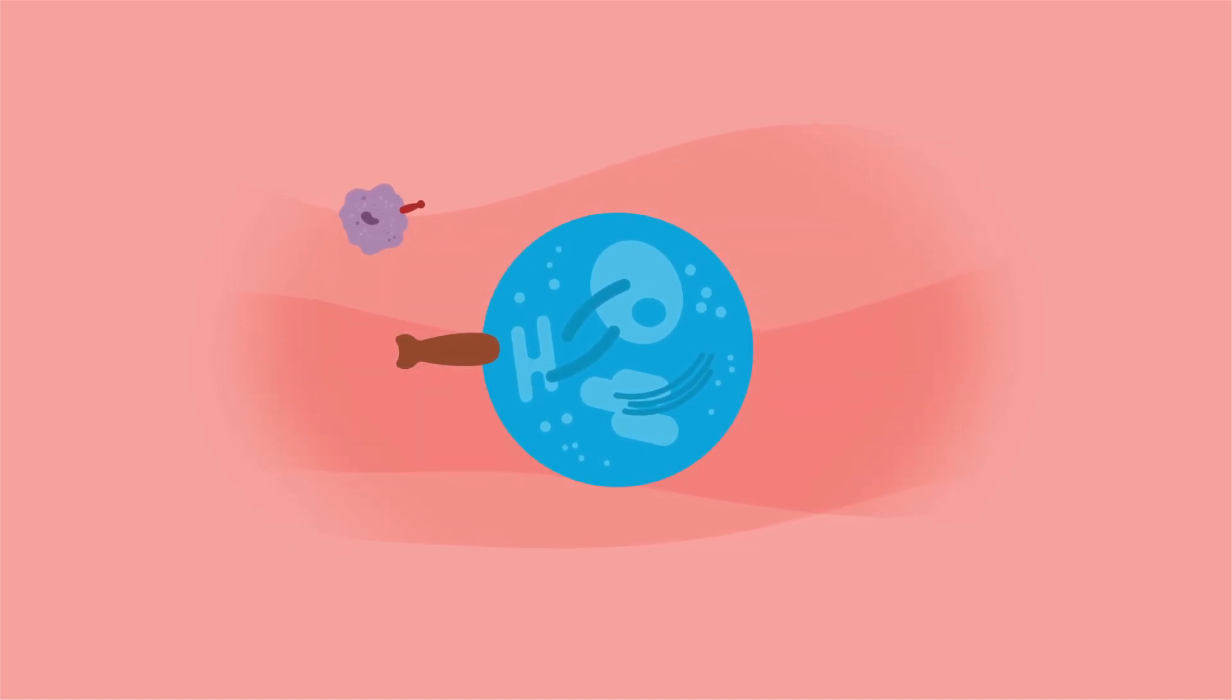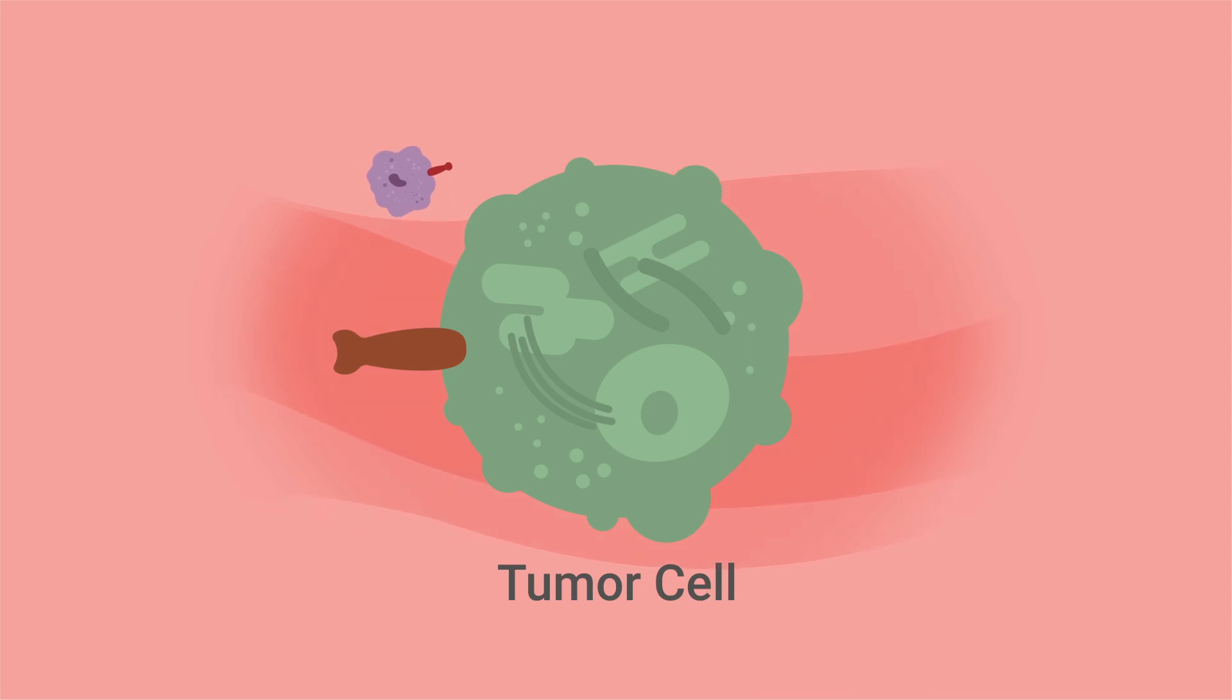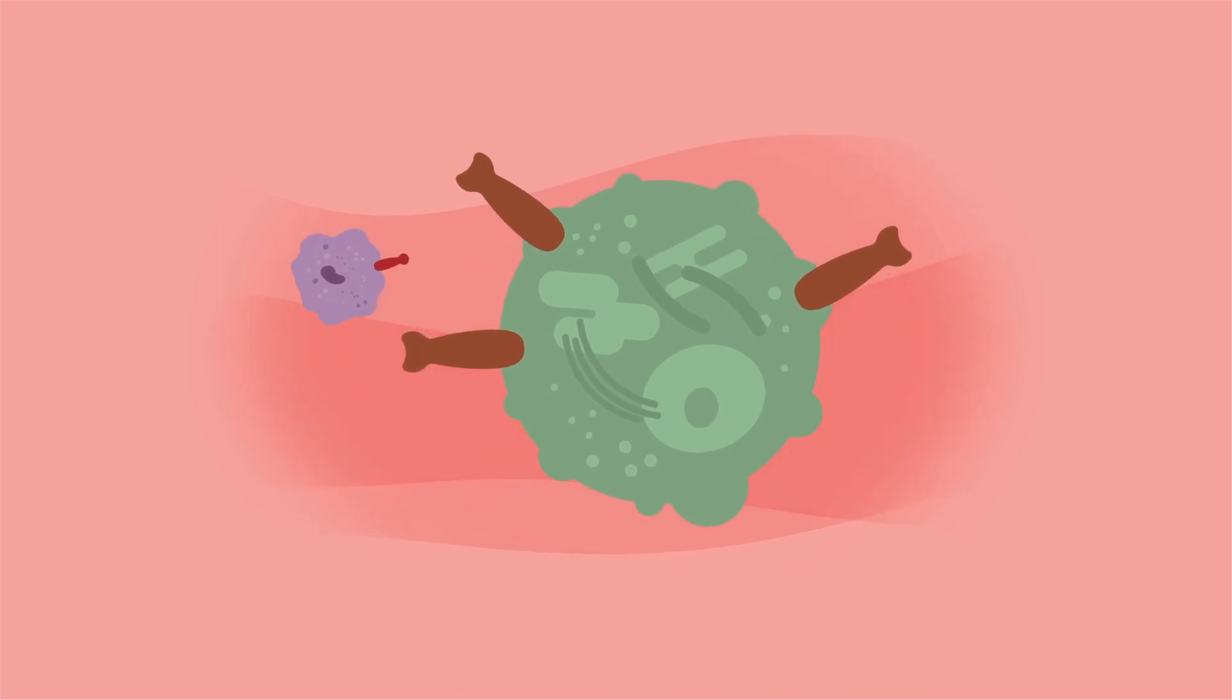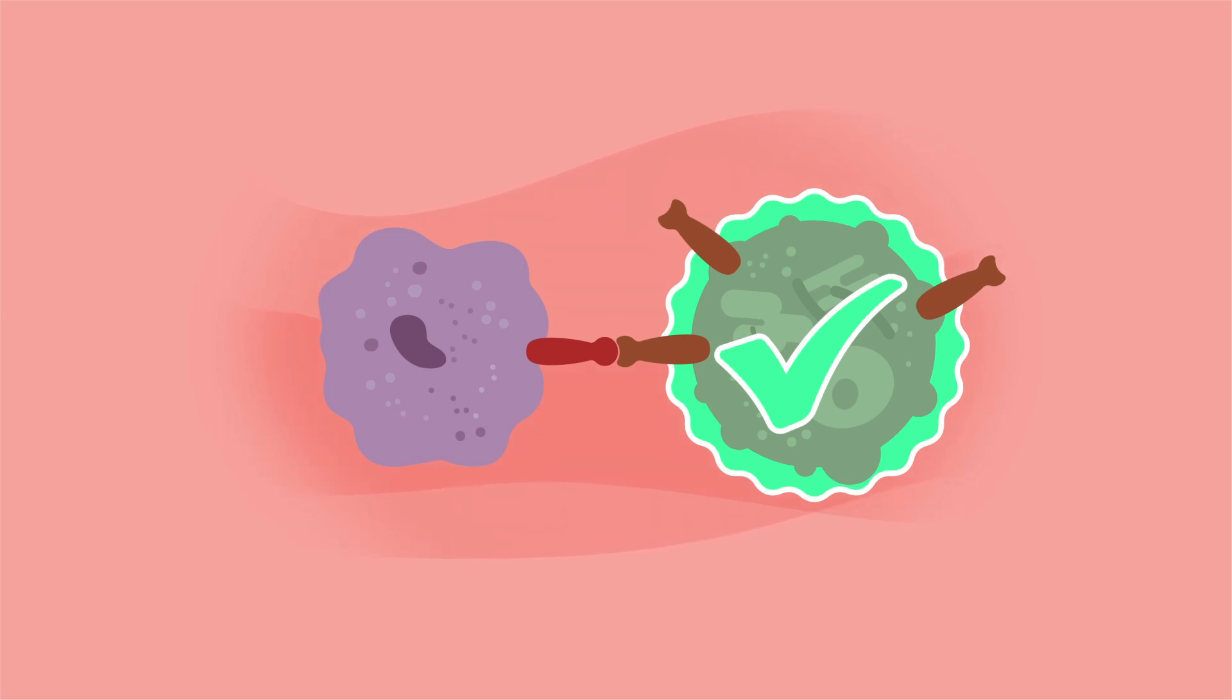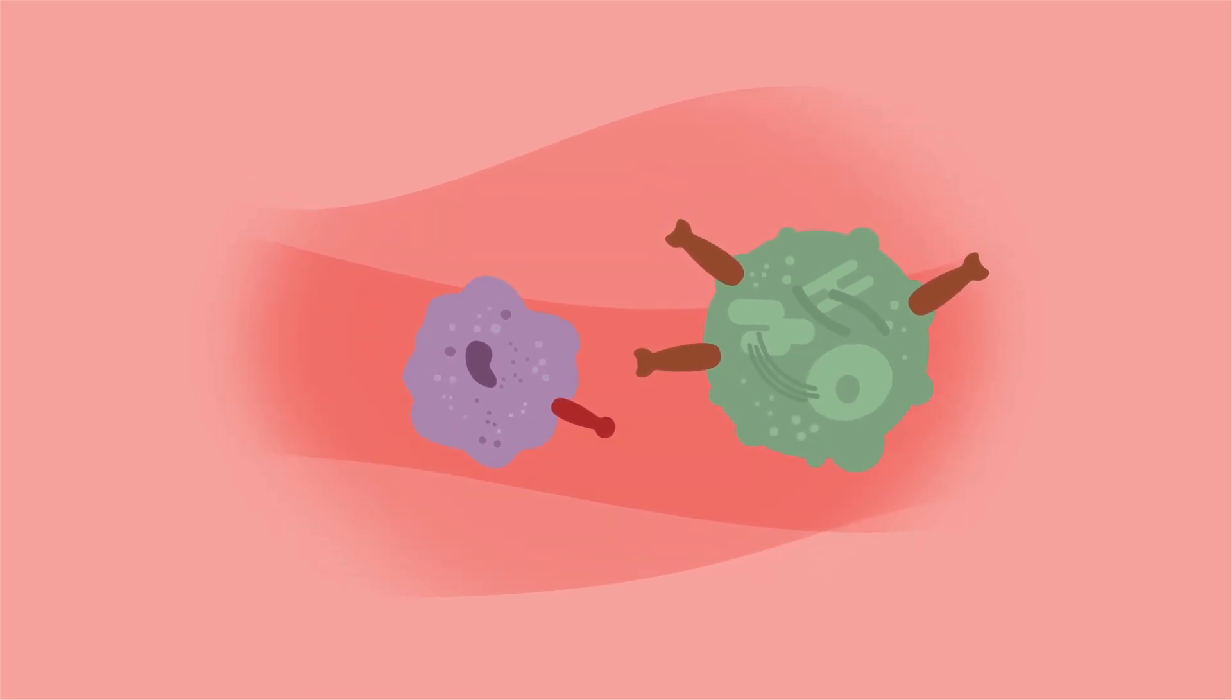Despite this important role, this signal is manipulated and exploited by tumor cells to their advantage. The overexpression of CD47 on a tumor cell's surface helps them hide in plain sight, tricking macrophages into viewing them as friends, not food. This allows the tumor cells to evade and ultimately escape macrophage-mediated killing.